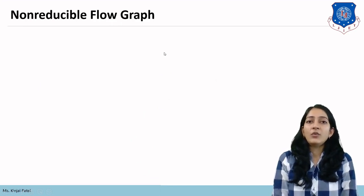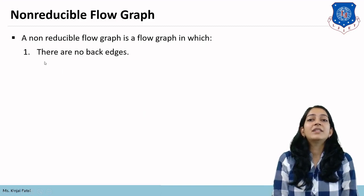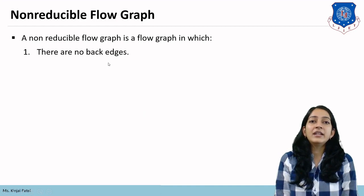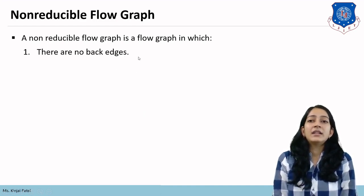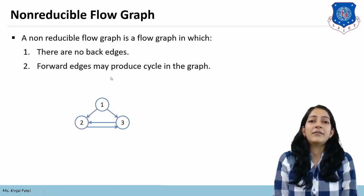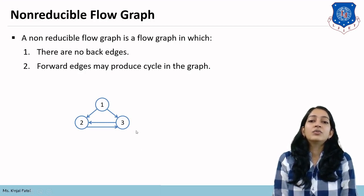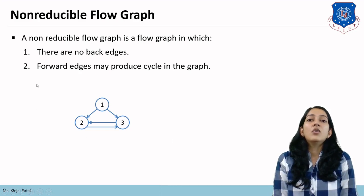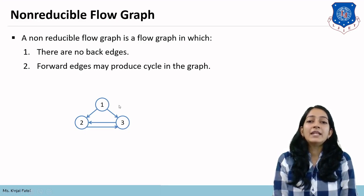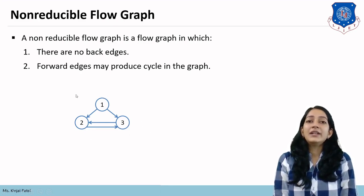A non-reducible flow graph is a flow graph with no back edges. Without back edges there is no loop iteration, and forward edges may produce cycles. In the example — edges 1→2, 2→3, 3→2 — this graph is non-reducible because although there is an edge from 3→2, it is between two child nodes with no back edge from child to parent, yet it creates a cycle.